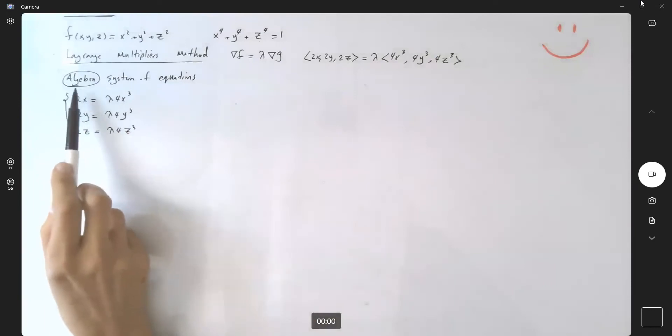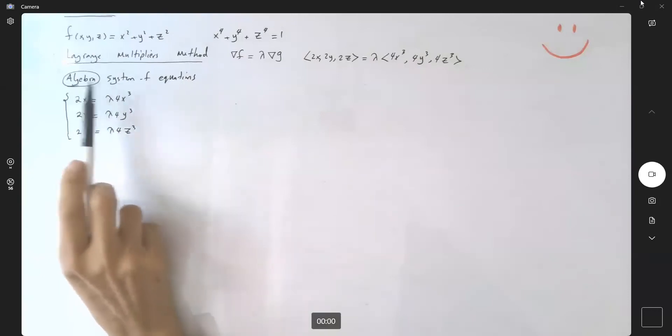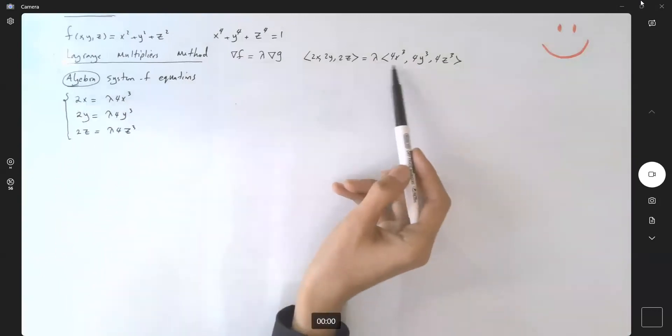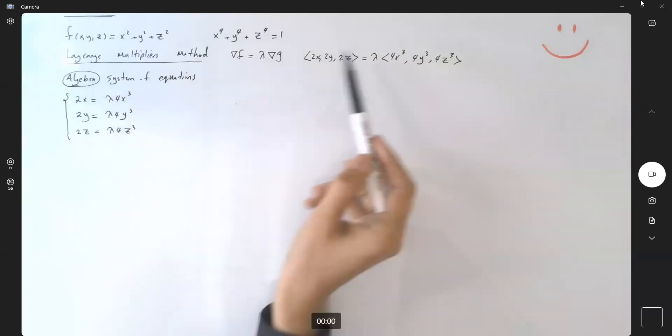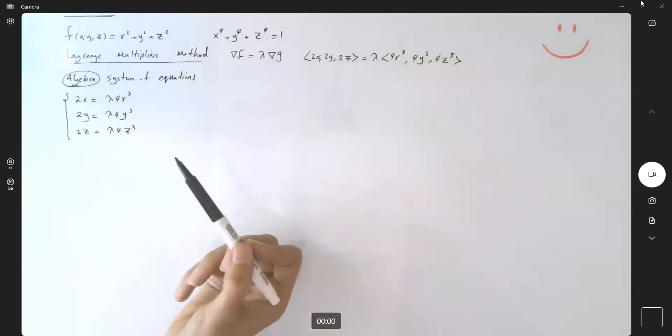Our first step after finding the gradients is to form the system of equations using algebra: 2x = λ·4x³, 2y = λ·4y³, and 2z = λ·4z³.